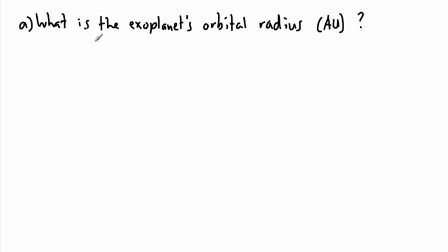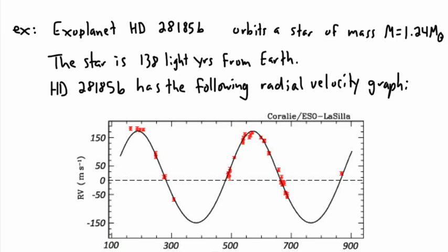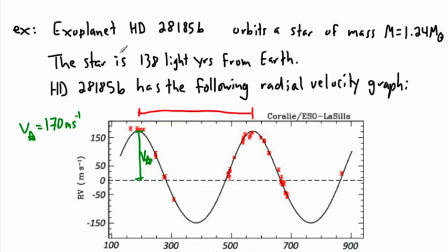Just from that graph, we can ask: what's the exoplanet's orbital radius, and what's the exoplanet's mass in Earth masses? The first thing to read from the graph is v star — the amplitude. It's a little more than 150; looking carefully, it's about 170. So v star is approximately 170 meters per second. And for the period, looking from one peak to another, it looks like about 383 days — roughly 400 when estimated quickly.